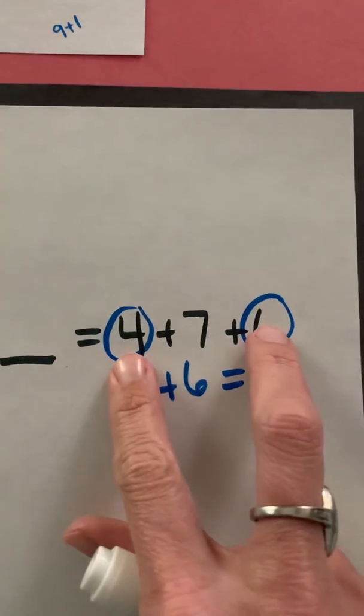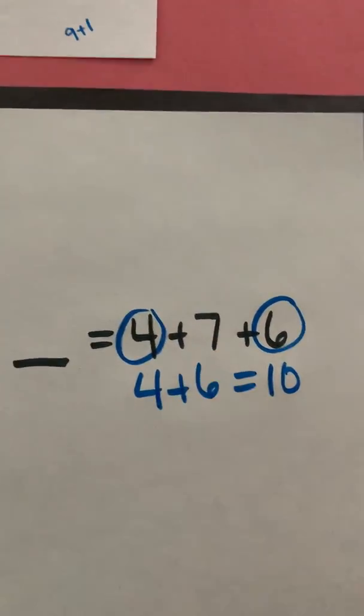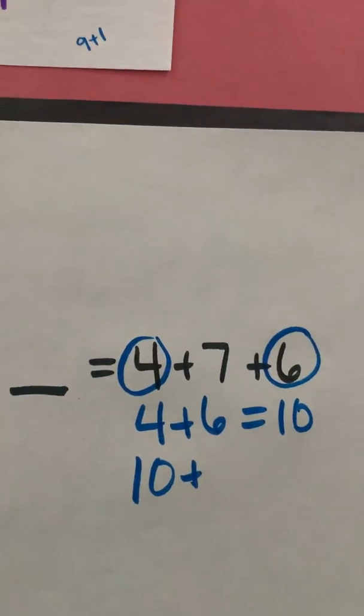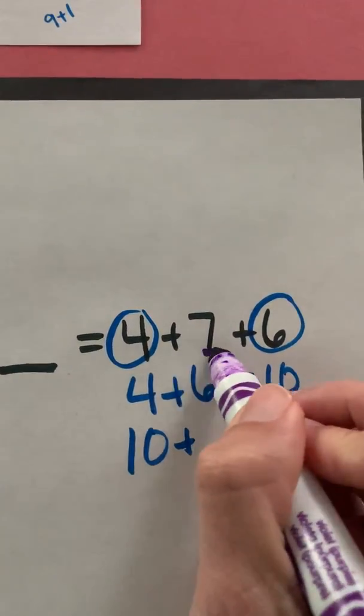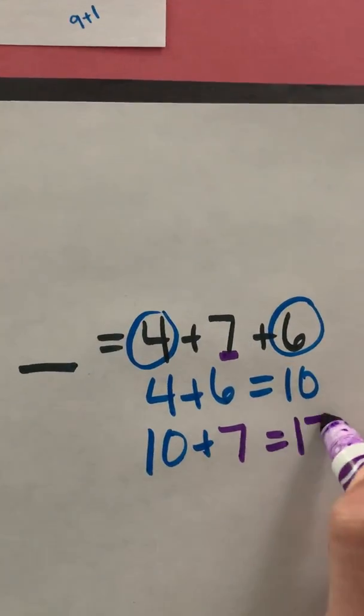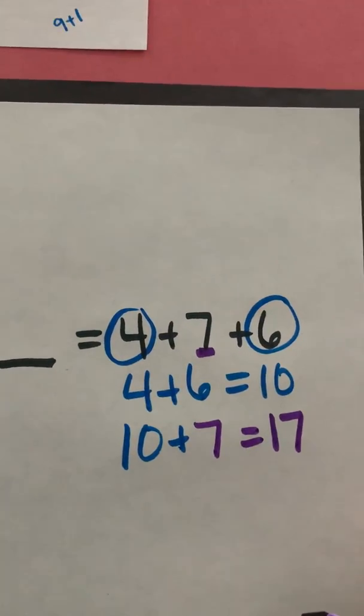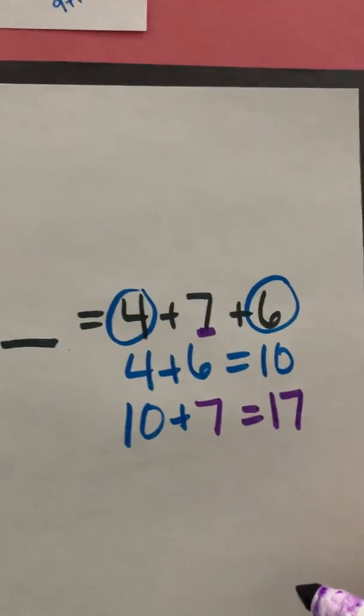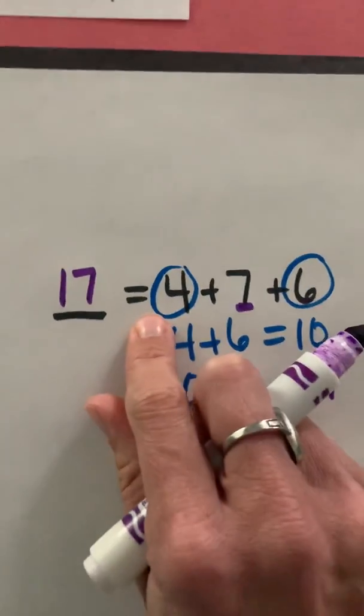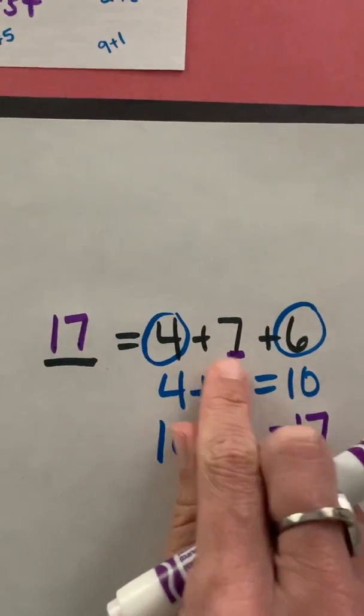Now I'm not done because I've only added two addends. I've got another one to add on so now I'm going to take the ten plus the seven here and that will give me 17. Ten plus seven is 17. So 17 is equal to or is the same as four plus seven plus six.